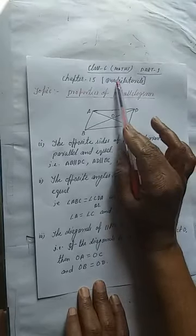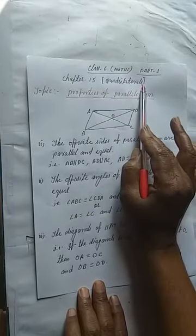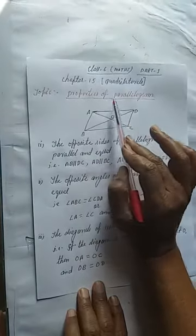So any figure which is made by four sides is called quadrilateral. Now, our topic is properties of parallelogram.